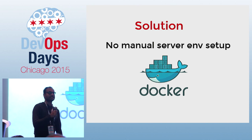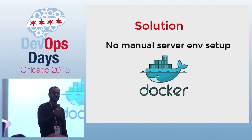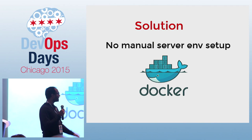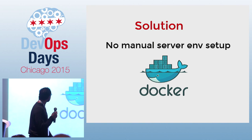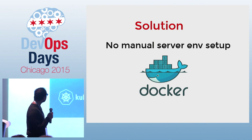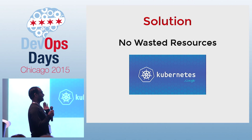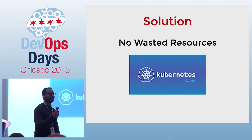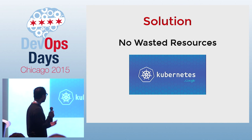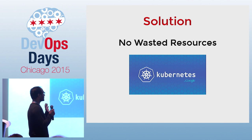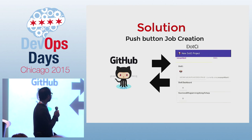Docker provides a nice declarative format for specifying your server configuration. And Kubernetes is one of the cluster managers — there are others like Apache Mesos and Docker Swarm. They make sure that your compute resources are allocated properly. I'm going to use Kubernetes as an example here.